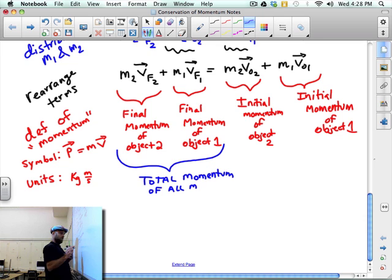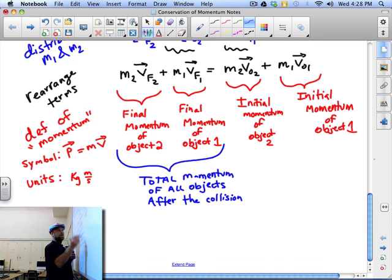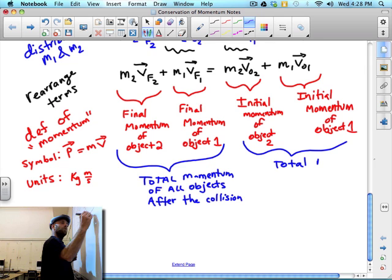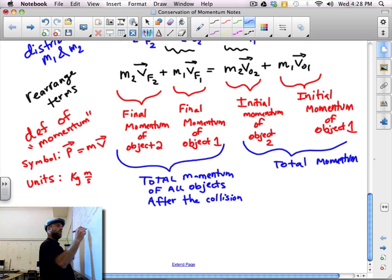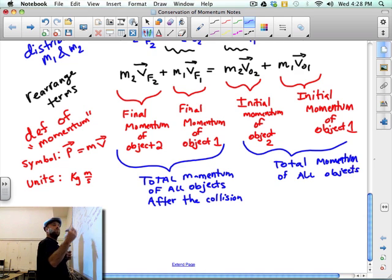Total momentum of all my objects. This is the total momentum of all my objects after the collision. And this one here is the total momentum of all objects before the collision.